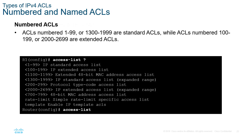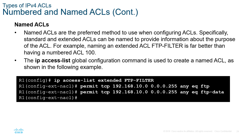We have numbered ACLs — instead of a name, we use a number. Standard ACLs use numbers 1 through 99, and also 1300 to 1999. Extended ACLs use numbers 100 through 199, or 2000 through 2699. We also have named ACLs — just like numbered ACLs, they are either standard or extended. Here is an example of an extended ACL that is named FTP-filter.